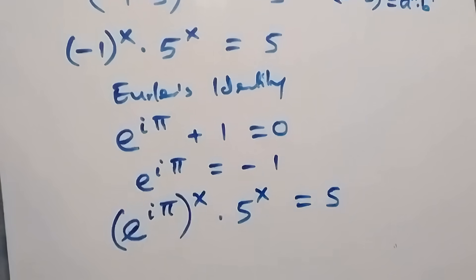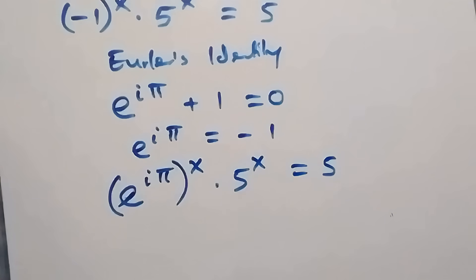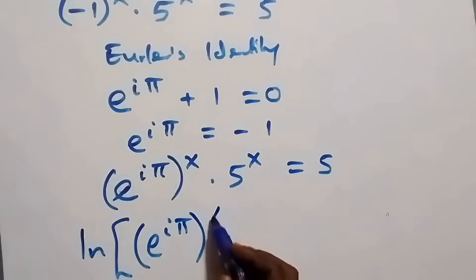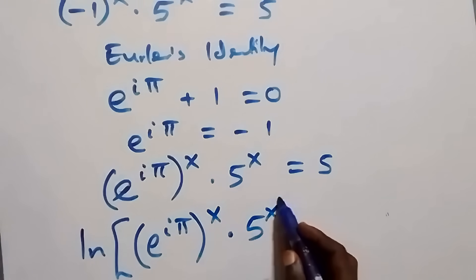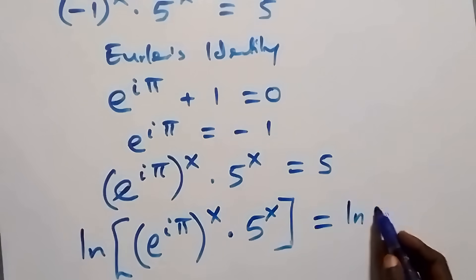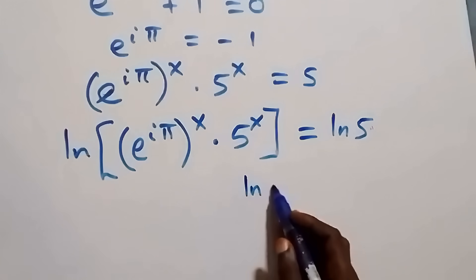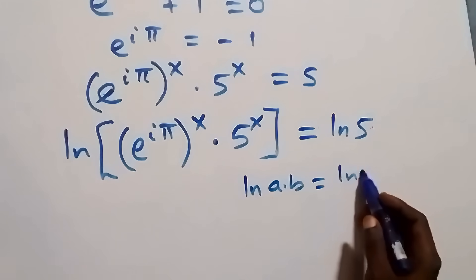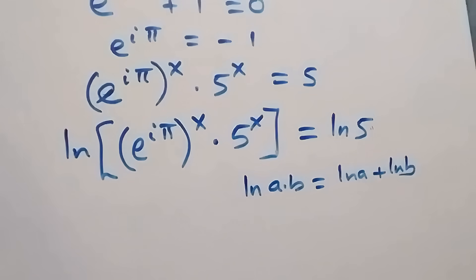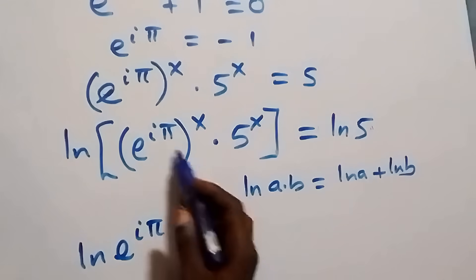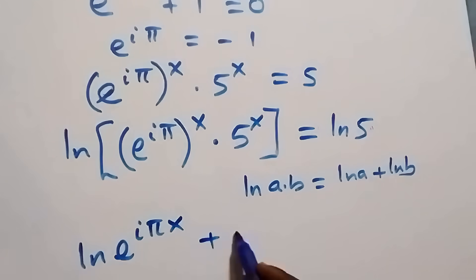Now we substitute: we have e raised to power i pi, raised to power x, times five raised to power x, equals five. We now introduce the natural log on both sides: ln of (e^(iπ))^x times 5^x equals ln five. Applying the log product rule ln(a times b) = ln a plus ln b, we get ln of (e^(iπ))^x plus ln of 5^x.